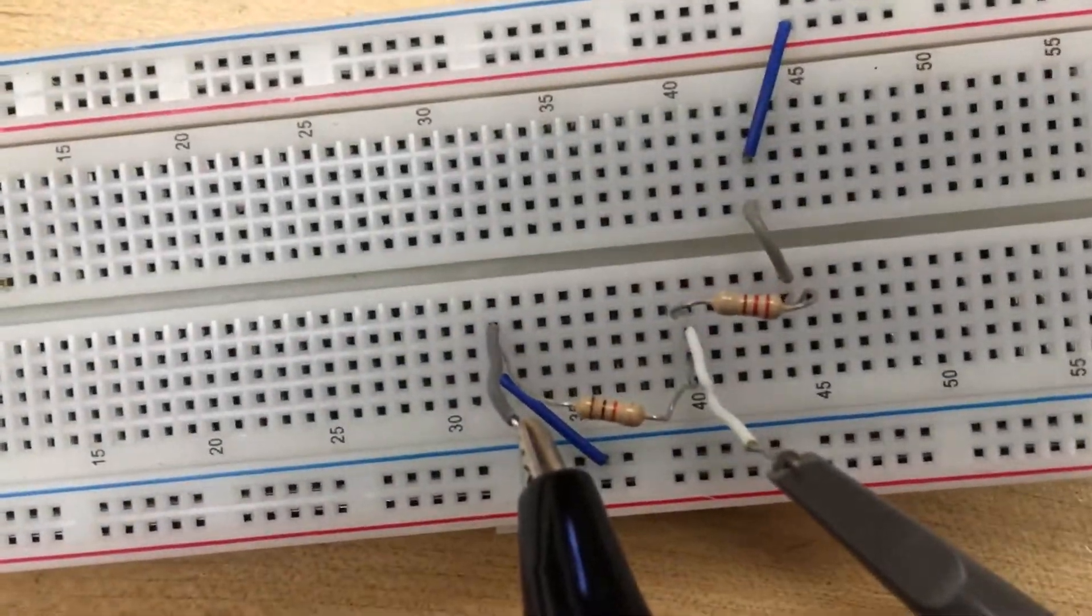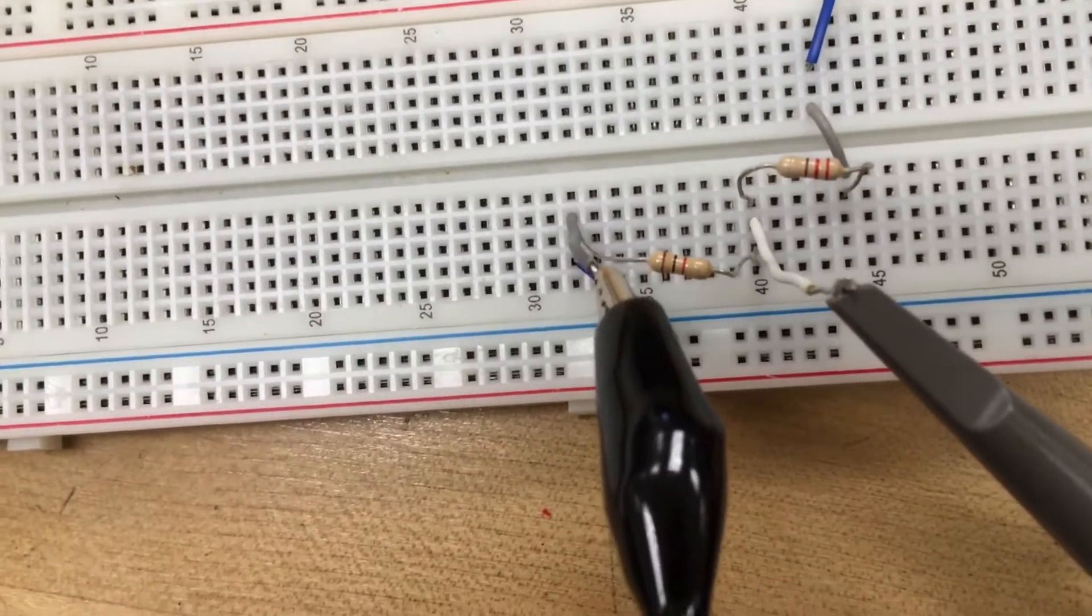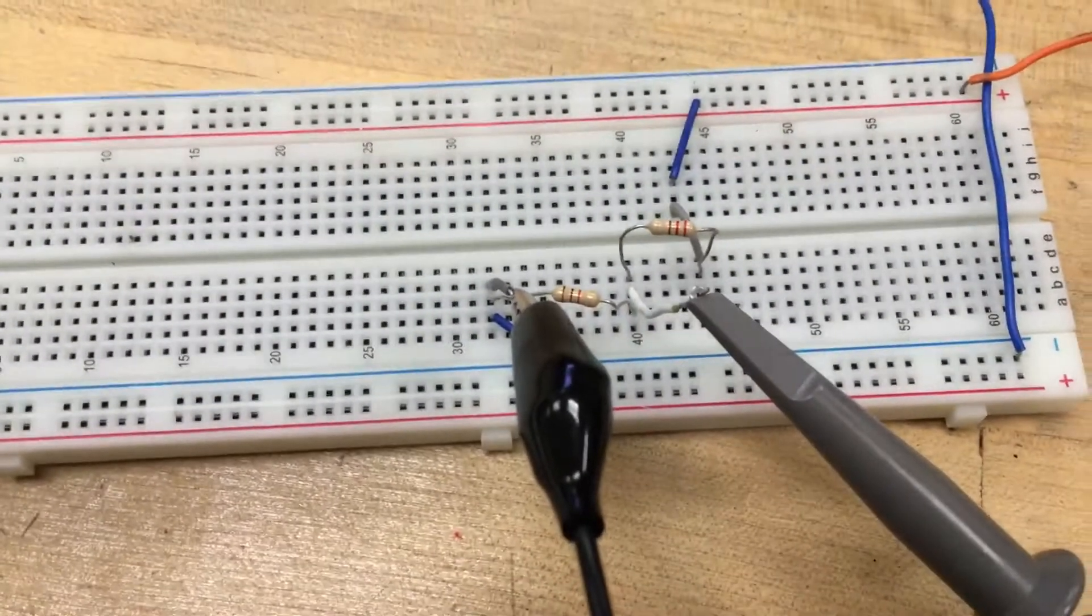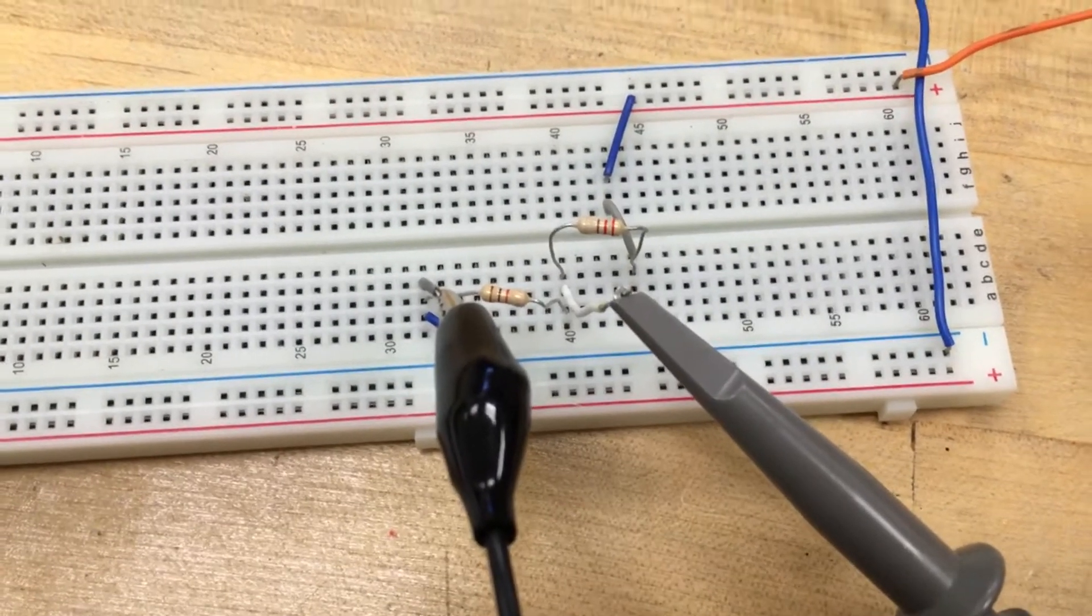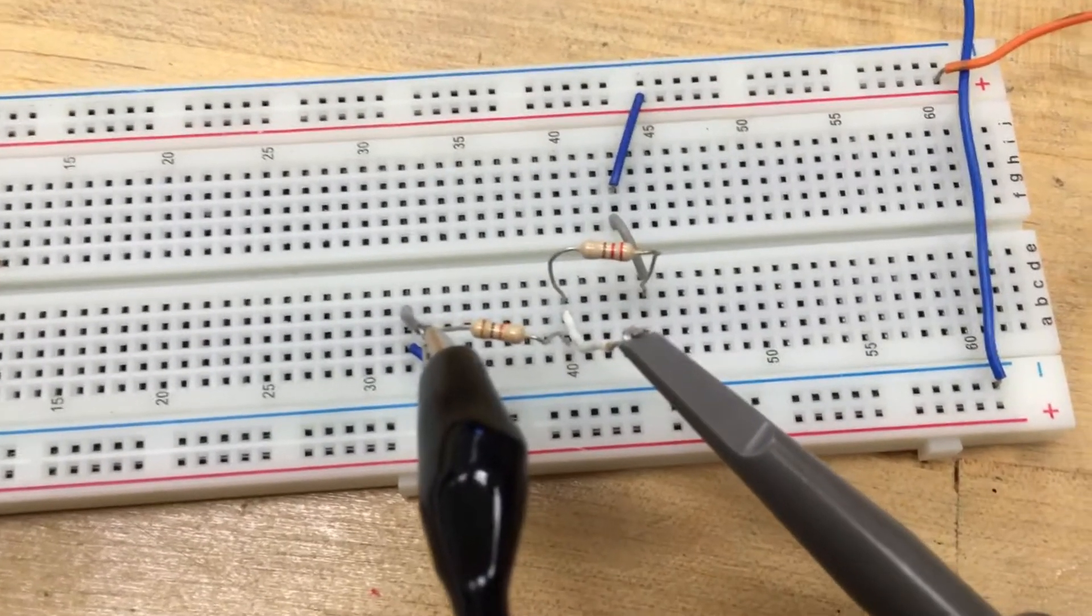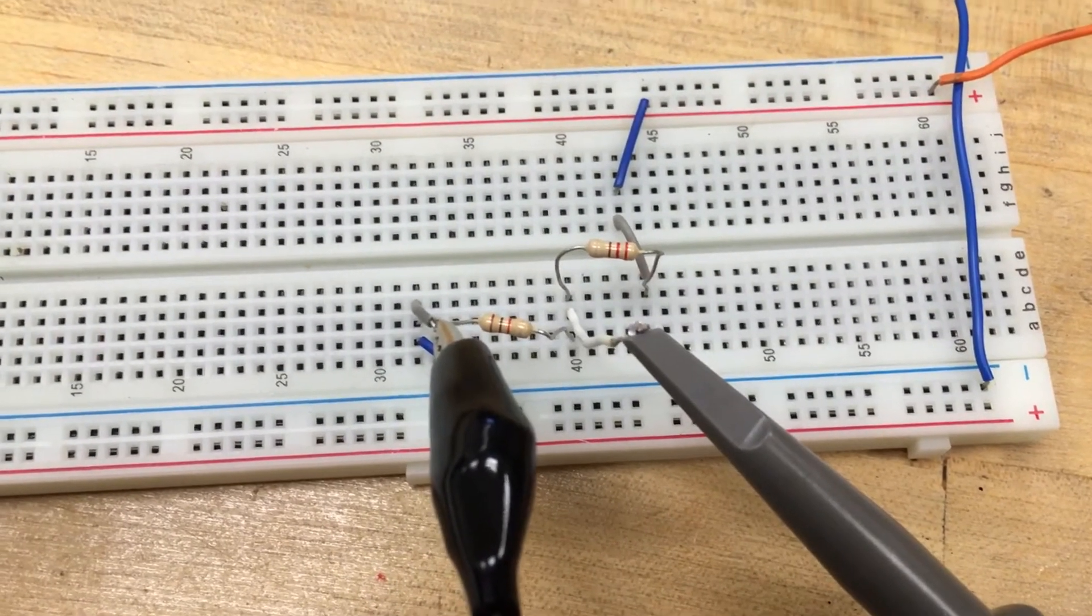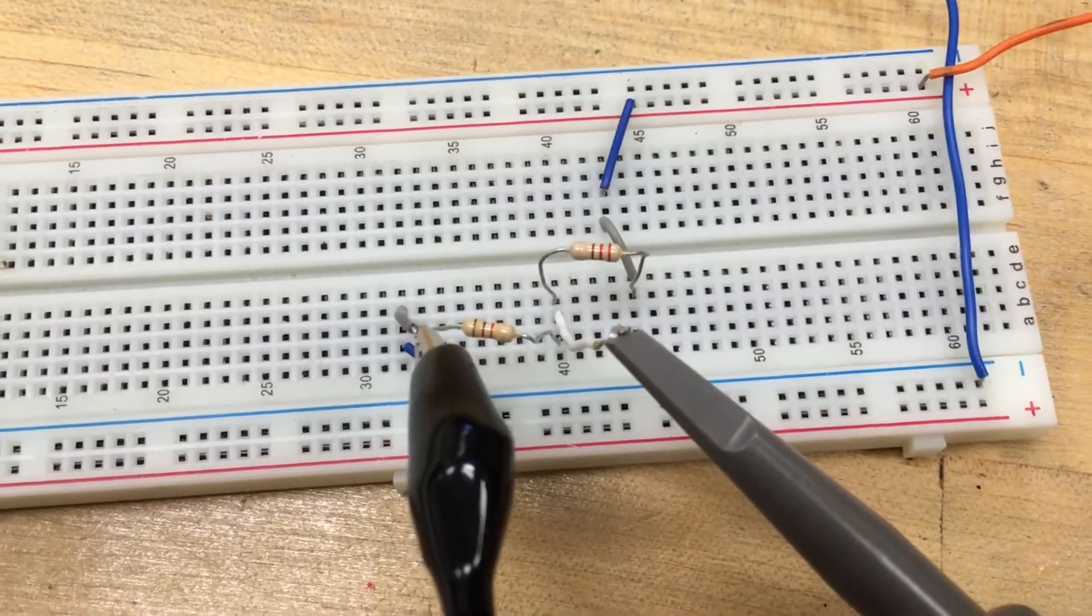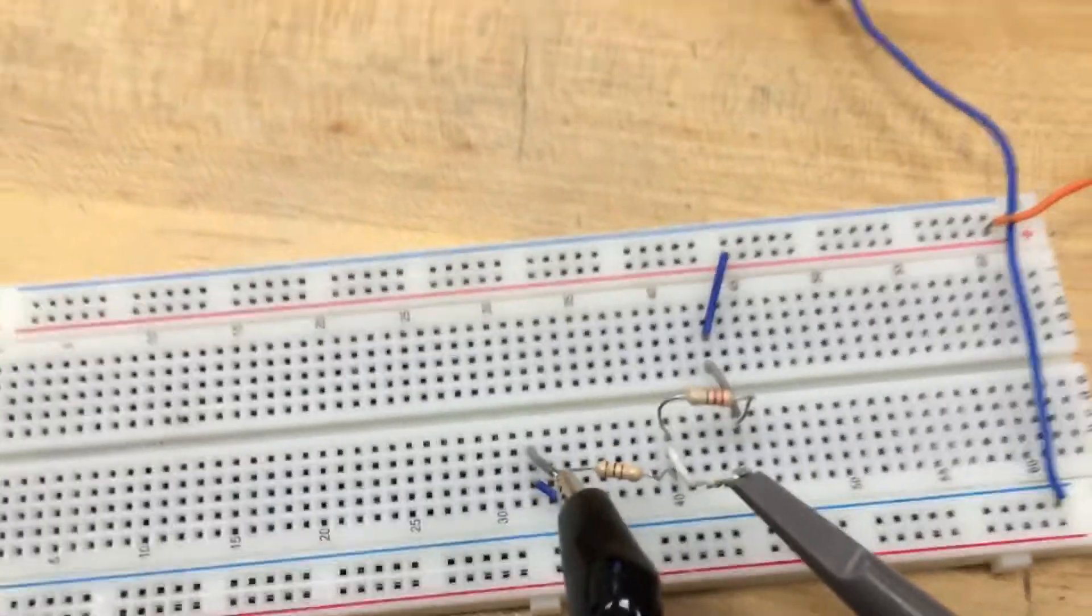So what we're doing there is we're measuring across the one kiloohm resistor. That should give us - well, if we think about that - that represents almost 80% of the resistance in this circuit, because you've got 1220 ohms of total resistance because they're in series, and this represents one kiloohm, so most of that, a little under 80%.